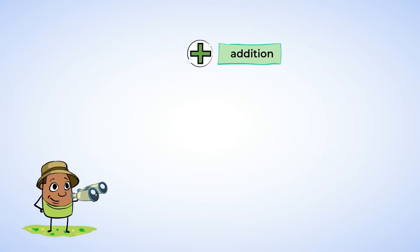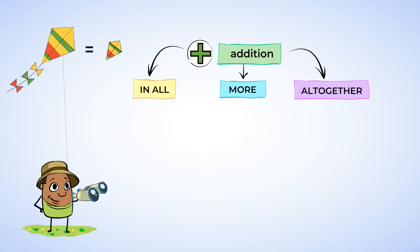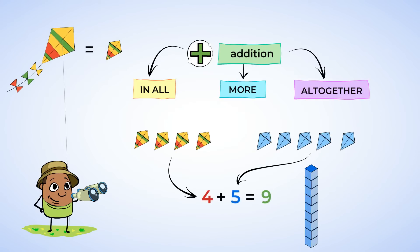First, we looked for clues to help us figure out if indeed we were adding. Mighty words like in all, more, and all together are our clues. Then, we drew a picture to show what's happening in the problem. We could also use blocks or other objects to represent each number in the problem. We asked, are there more things now? And that's how we knew we were adding.